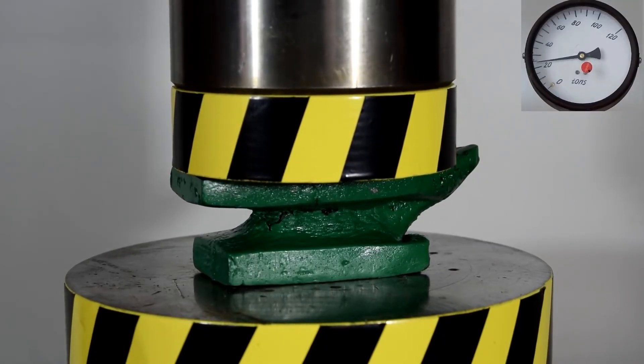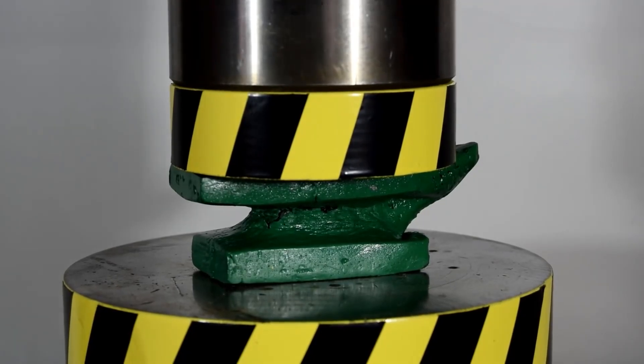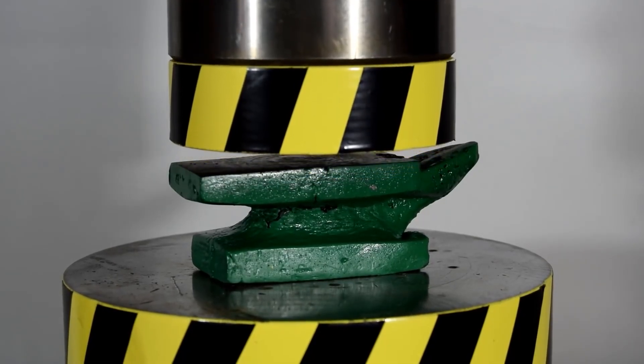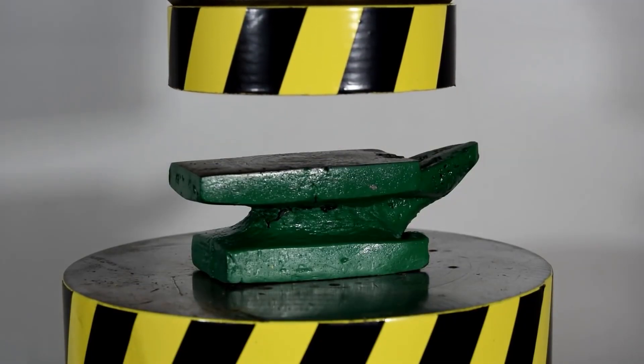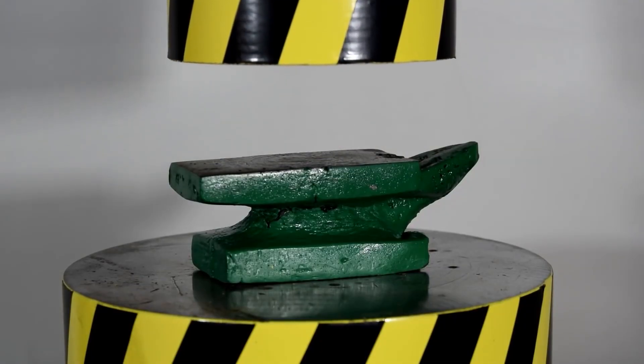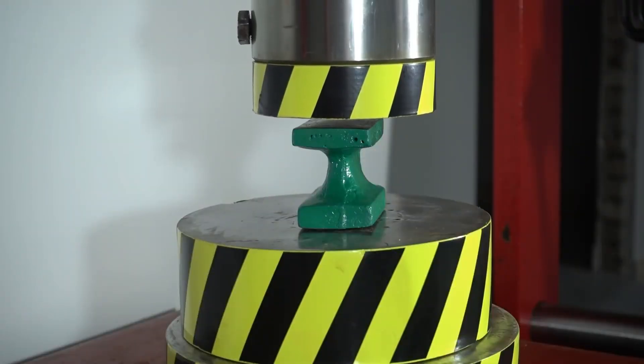It began to deform at a load of 50 tons. With a high probability, we can say that it was definitely not cast iron, since cast iron would crack under such a load, and here we saw plastic deformation. It's either some very low-grade steel or iron.